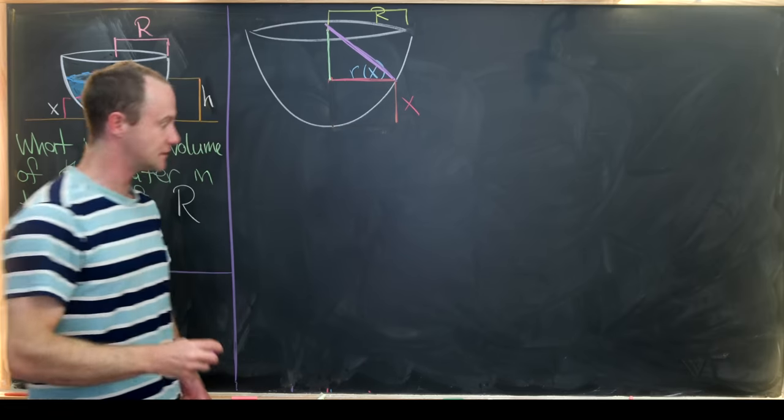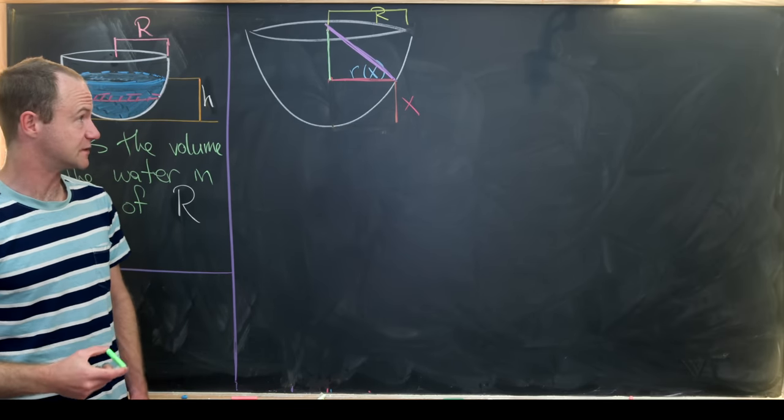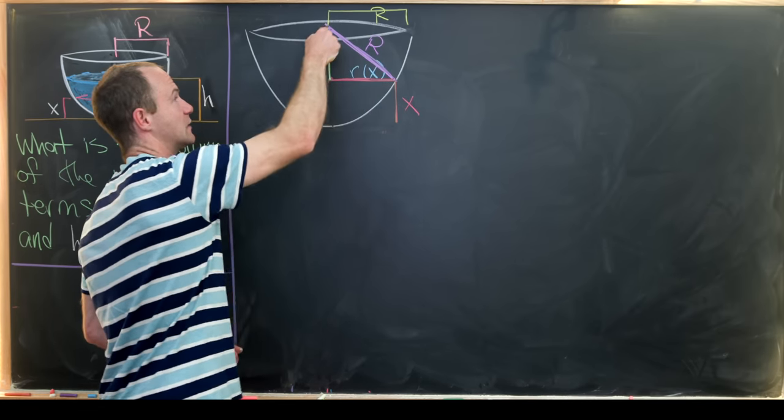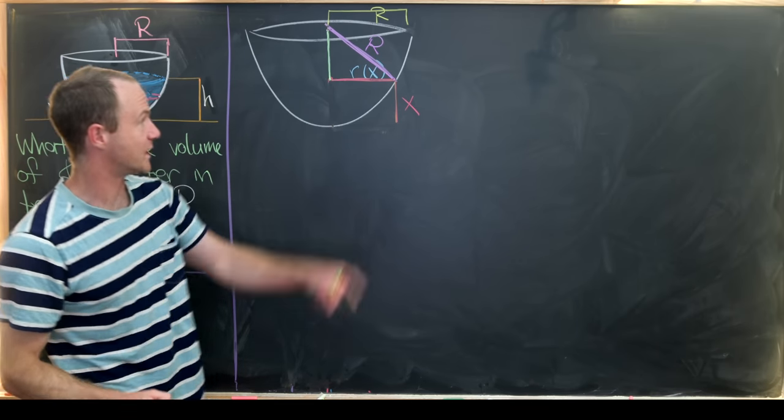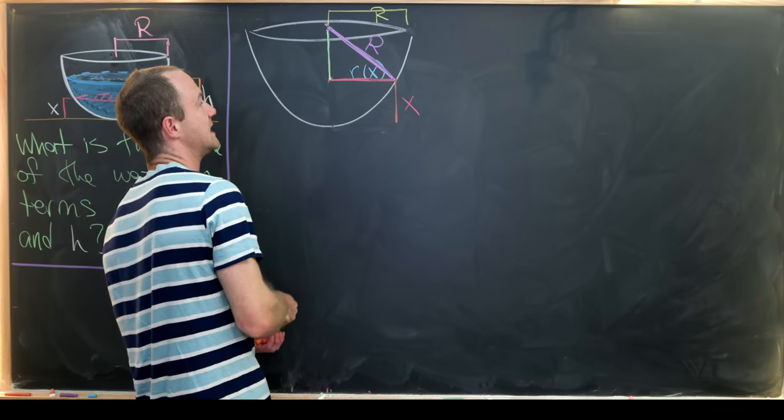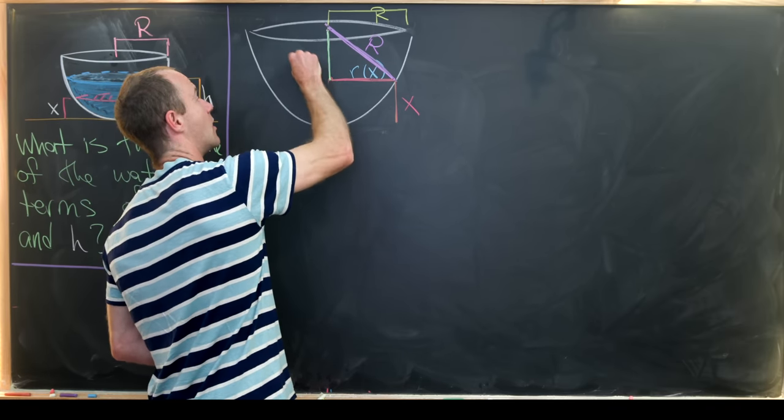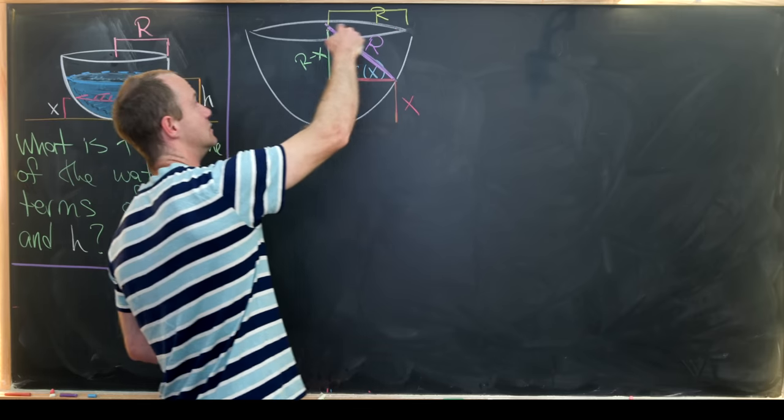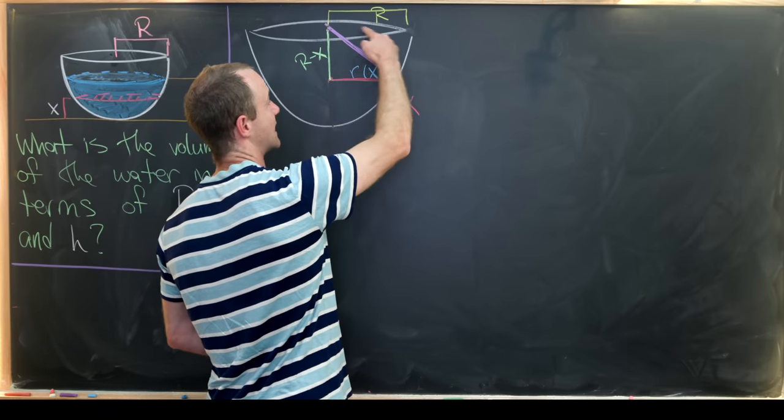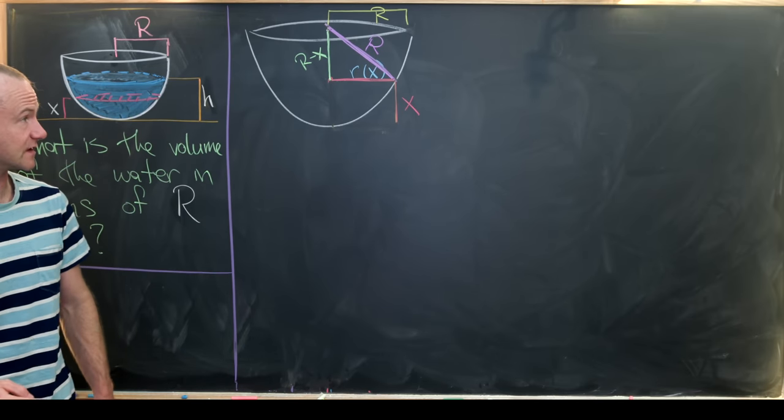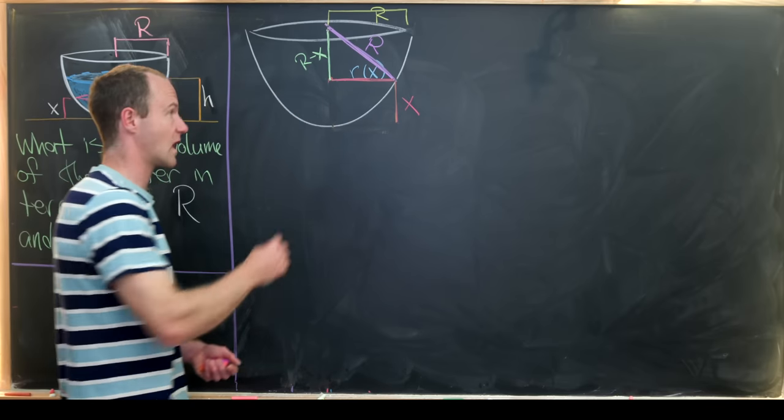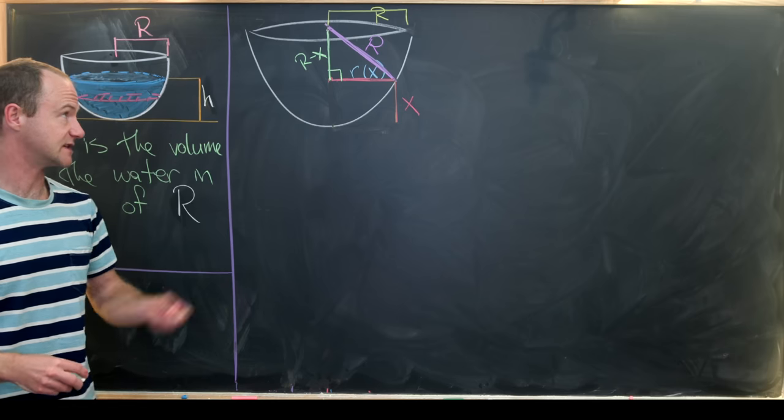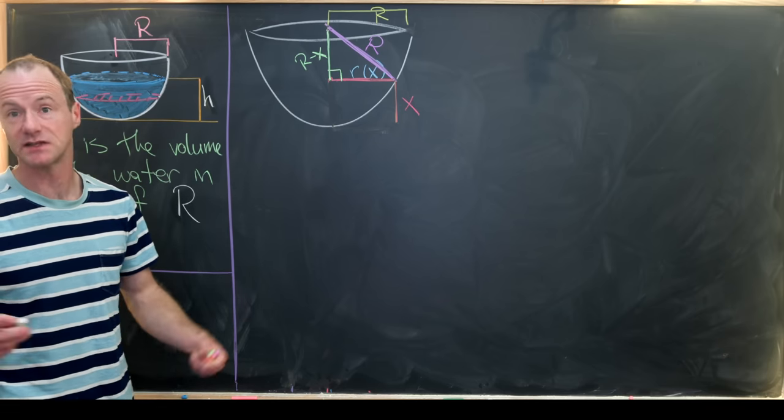And that might seem not super useful, but we in fact know lots of those measurements already. So this measurement right here is capital R, given we're going from the center of the sphere to a point on the sphere. This point right here is capital R minus x, given that if we extend this all the way up to our plane up here, this plane is kind of in the center of the sphere. But notice that gives us a right triangle that we can use the Pythagorean theorem with in order to calculate r of x in terms of capital R and x.